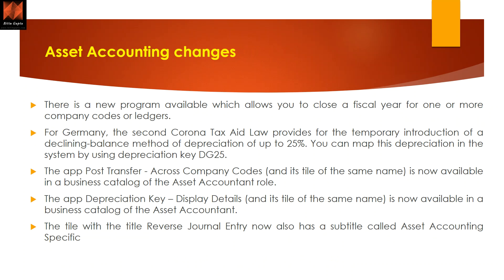Asset accounting — as you know with S/4HANA — is one of the key areas changing with every release. Some key changes include a program now available that allows you to close the fiscal year for one or more company codes or ledgers. For Germany specifically, the second Corona Tax Aid Law provides for the temporary introduction of a declining balance depreciation method, and you can map this depreciation in the system using depreciation key DG25. This key was introduced specifically related to COVID-19.